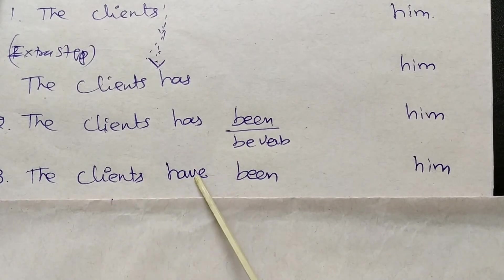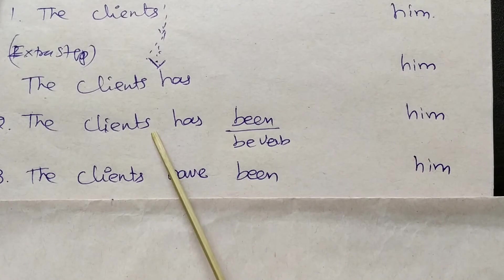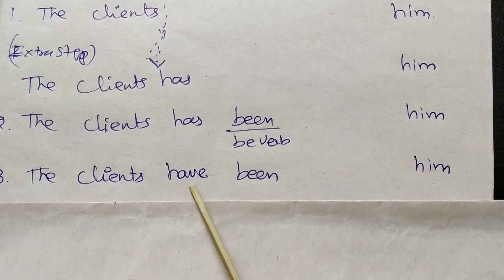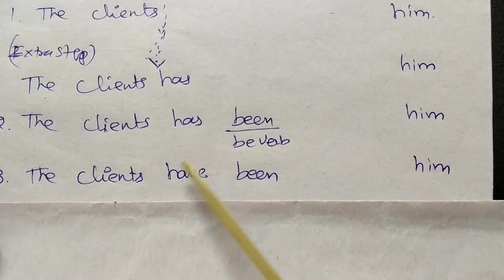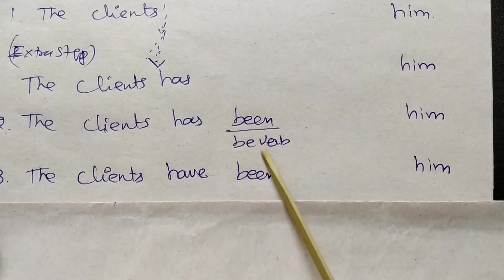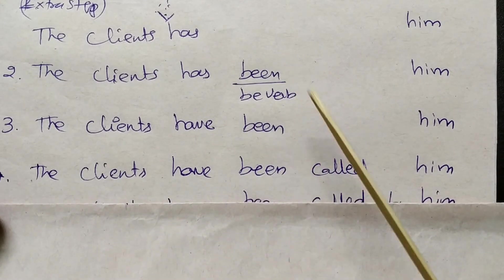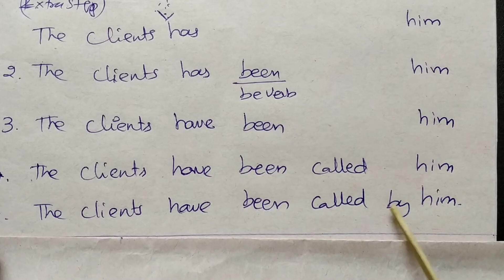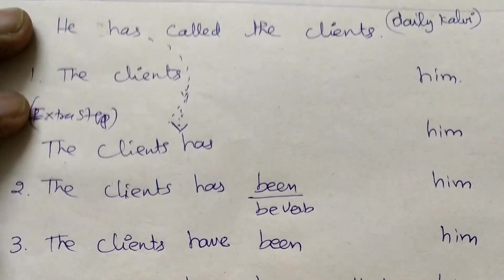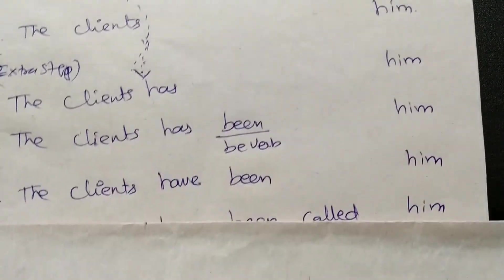The new subject is 'clients,' which is plural. For plural subjects, we use 'have' instead of 'has.' So the passive becomes: 'The clients have been called by him.'